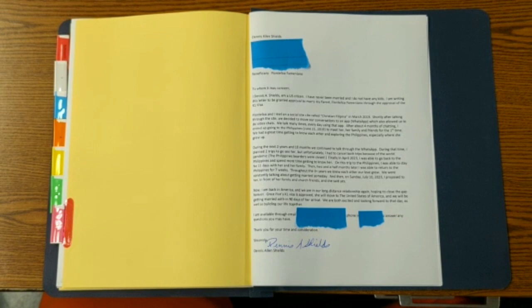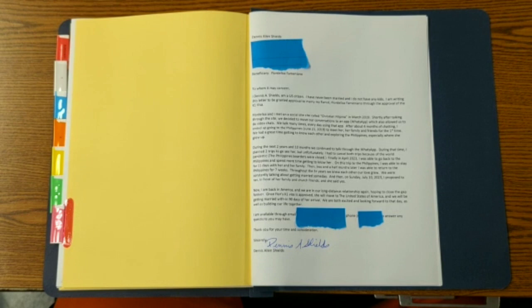And it says, to whom it may concern, I, Dennis A. Shields, am a USA citizen. I've never been married, nor do I have any kids. I'm writing this letter to grant approval to marry my fiancée, Floor de Lisa, through the approval of the K-1 visa. Floor and I met through a social site called Christian Filipina in March 2019. Shortly after talking through the site, we decided to move our conversations to an app, WhatsApp, which also allowed us to do video chats. We talked many times every day using this app. And about four months after chatting, I ended up going to the Philippines in June 2019 to meet her, her family, and friends for the first time. We had a great time getting to know each other and exploring the Philippines, especially where she grew up.